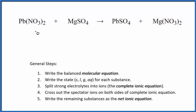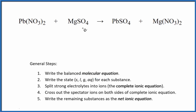In this video, we'll write the balanced net ionic equation for Pb(NO3)2 plus MgSO4 — lead 2 nitrate plus magnesium sulfate. First thing we need to do is balance the molecular equation. In this case, the molecular equation is already balanced, so that's nice.